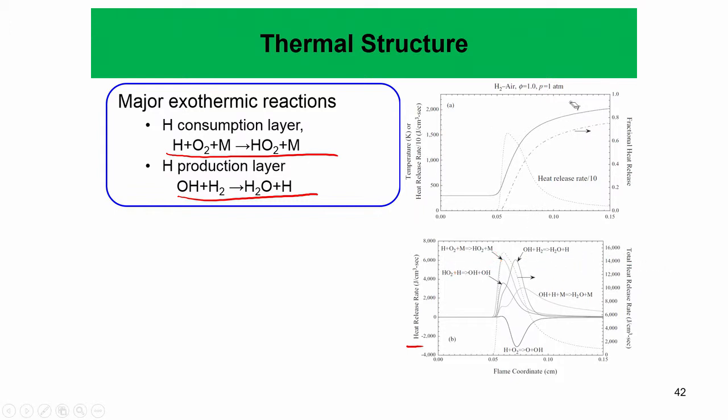If you plot the heat release rate with temperature, the heat release rate essentially peaks at a very low temperature of about 700–800 Kelvin. This is in stark contrast with all the analysis done so far, where we assumed that large activation energy causes heat release to happen at large temperature. But here, the heat release comes from a reaction with very low activation energy — almost zero — so the heat release comes at low temperature and changes the whole flame structure. This is a somewhat exceptional case for hydrogen; for most hydrocarbons, heat release occurs at higher temperature, and the asymptotic high activation energy analysis holds better.